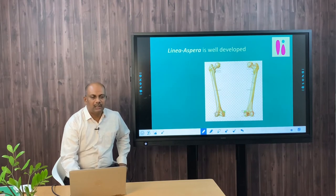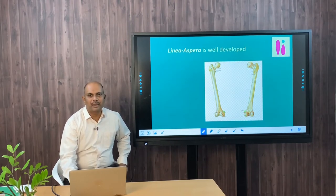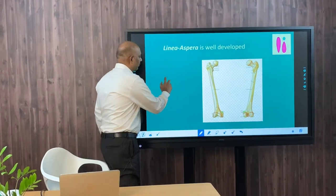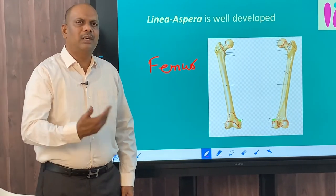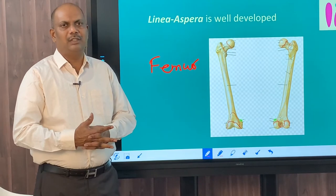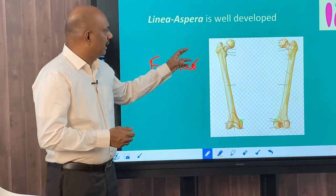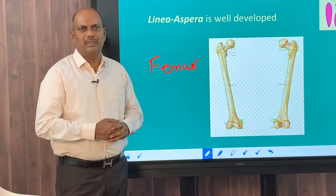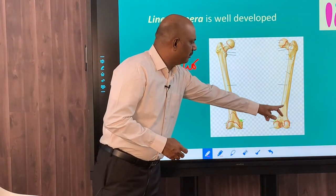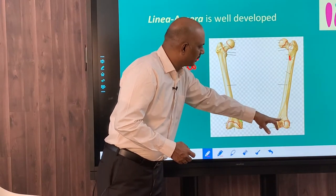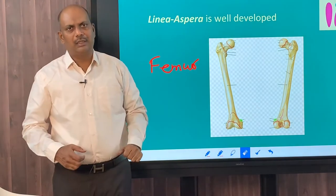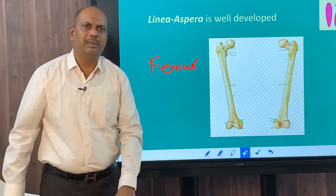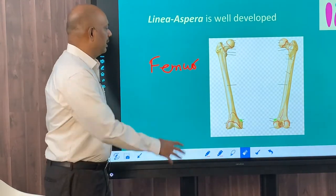Linea aspera is well developed for Australopithecus. It is a small groove found on the backside of the femur bone — the bone in the thigh region. As hominids got an erect posture, there was a need for extra muscles in the thigh region for locomotion, and the original attachment surfaces were not sufficient. So in the course of evolution, a small groove — the linea aspera — developed on the backside of the femur bone, running across it. The presence of linea aspera in the femur bone of Australopithecus suggests erect posture and bipedal locomotion.